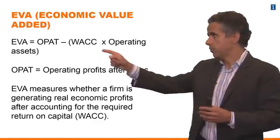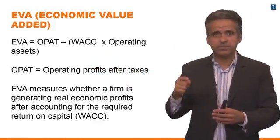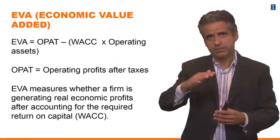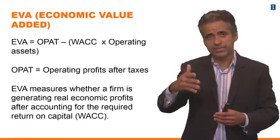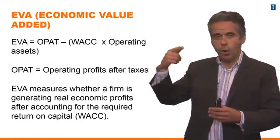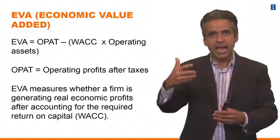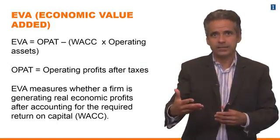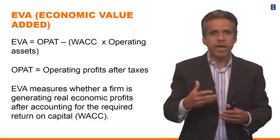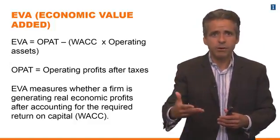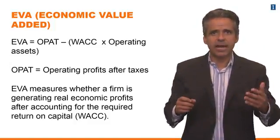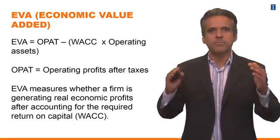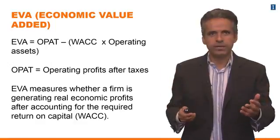What EVA gives you is the difference between OPAT and the WACC — which is the minimum percentage return — times the operating assets, which are an estimate for how much capital is invested in that company. So EVA measures whether the company is generating real economic profits after accounting for the required return, after accounting for the minimum profits the company should generate.